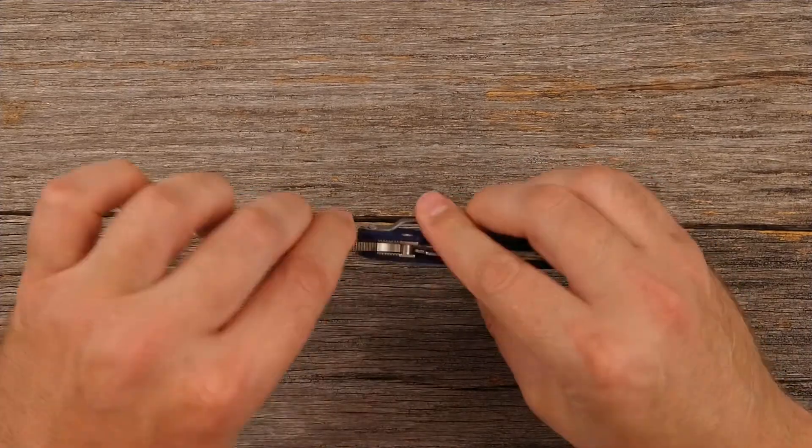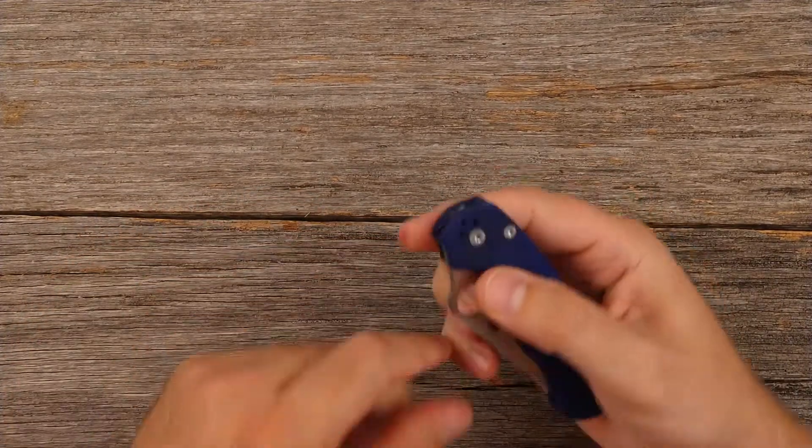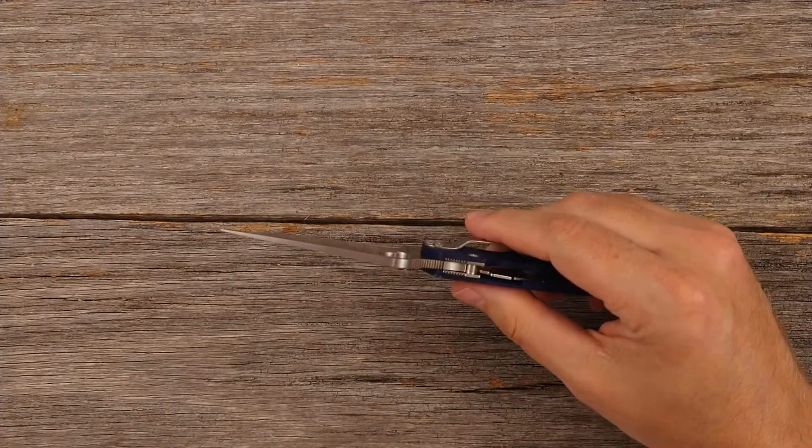But with a compression lock, it's trying to actually compress that liner from top and bottom. And it's just not something that it can easily do. So it's a very secure lockup.